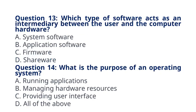Question 13: Which type of software acts as an intermediary between the user and the computer hardware? A. System software, B. Application software, C. Firmware, D. Shareware. The correct answer to question 13 is option A: System software. Explanation: System software acts as an intermediary between the user and computer hardware, managing the computer's resources.